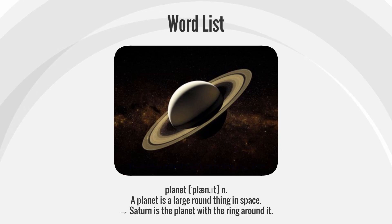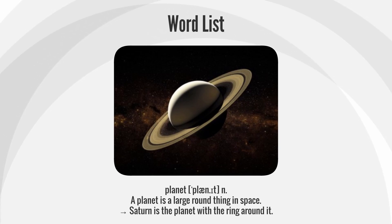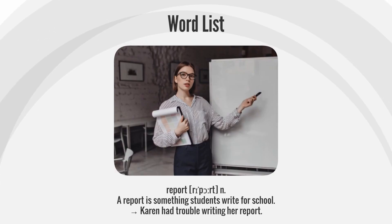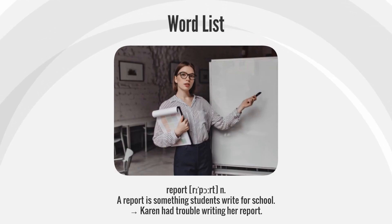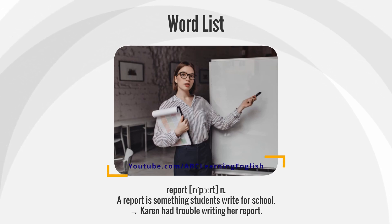Planet: A planet is a large, round thing in space. Saturn is the planet with the ring around it. Report: A report is something students write for school. Karen had trouble writing her report.